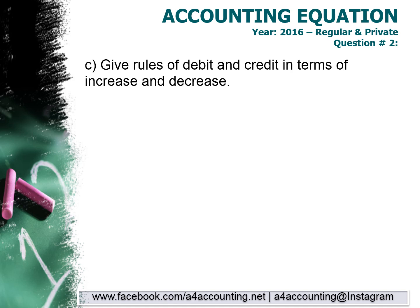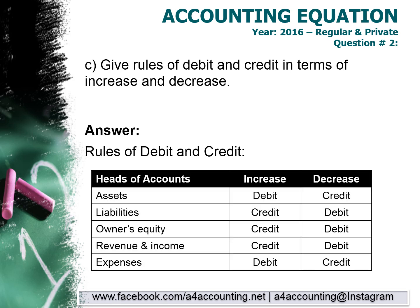Moving to the next part: give the rules of debit and credit in terms of increase and decrease. You have been studying these rules since day one. There are five types of accounts: assets, liabilities, owner's equity, revenue and income, and expenses. For assets, if they increase, we record debit; if they decrease, credit. For liabilities and owner's equity, if they increase, credit; if they decrease, debit. Revenue and income: increase is credit, decrease is debit. Expenses: increase is debit, decrease is credit. In your exam, you will present these rules in this format to the examiner.